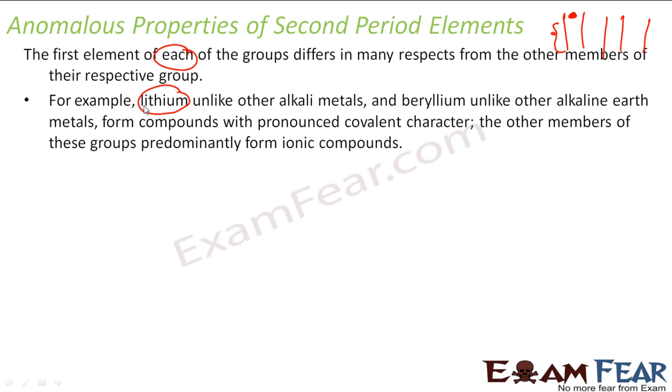For example, if you see lithium, sodium, potassium, rubidium, cesium - these are my elements in group 1. And beryllium, magnesium, calcium, strontium, barium in group 2. So lithium, unlike other alkali metals, and beryllium, unlike other alkaline earth metals, form compounds with pronounced covalent character. And other members if you see, they all form ionic compounds.